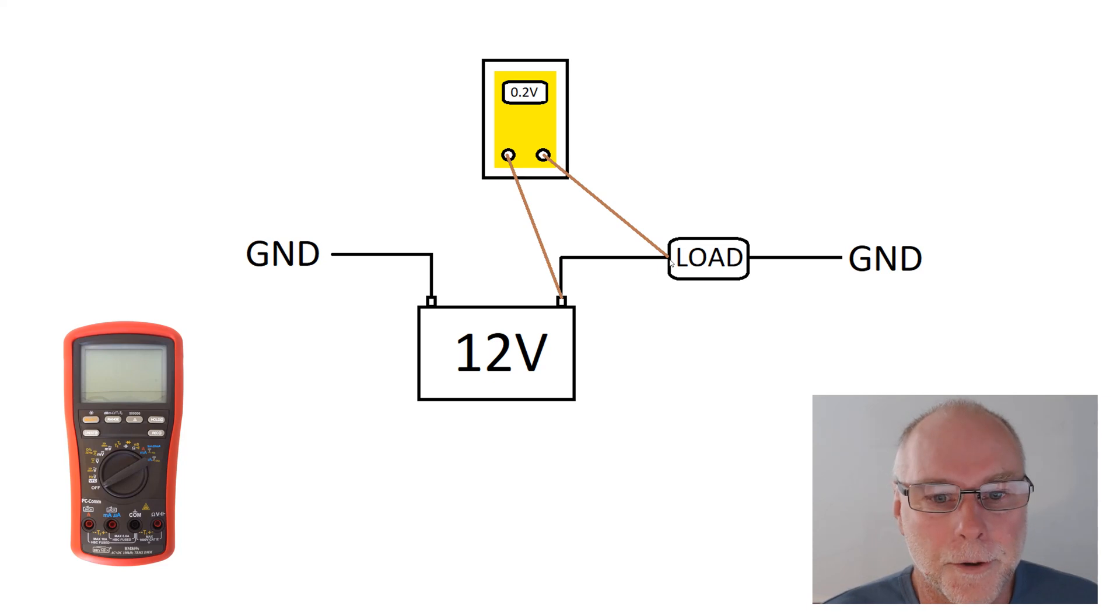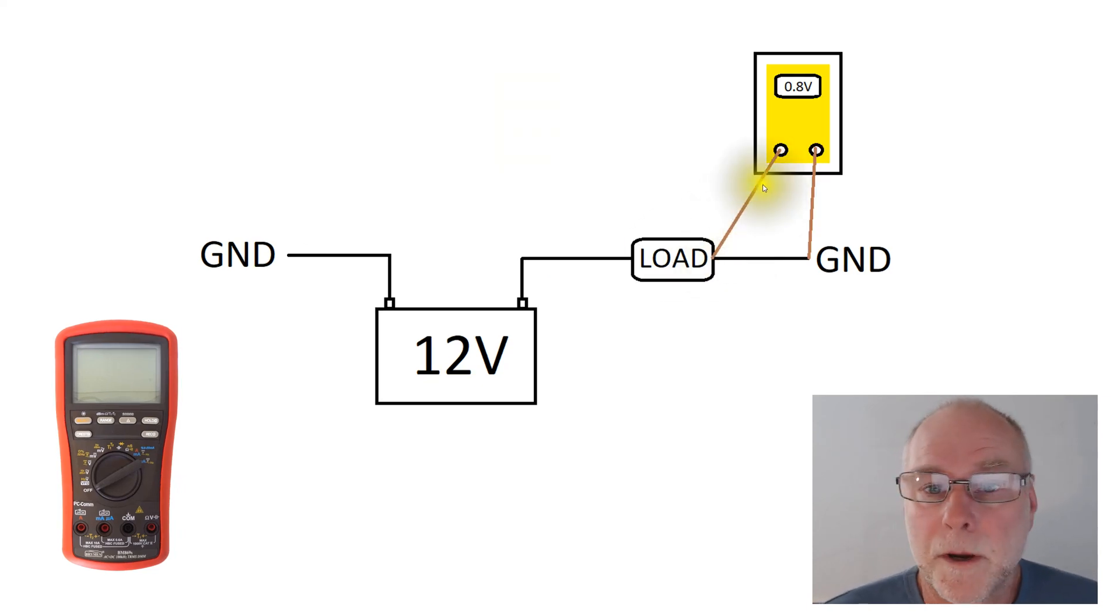What about the other side of the load? Well, again, we just connect the multimeter across those two points. In this case, I've shown a higher value. I've shown 0.8 volts. I just made those values up, of course, but that might indicate, and it would indicate in this case, that there is a higher resistance in this wire. This wire is not as good as the battery feed. The earth wire to ground is not as good at carrying the current. Obviously, the higher the voltage drops, the less volts that are actually getting to the load, and so effectively, the less the load will work well. So headlights will be dimmer, the starter motor will turn more slowly, and so on.